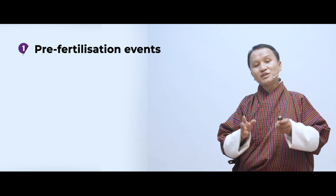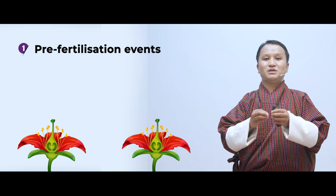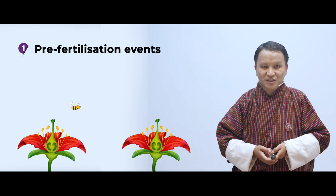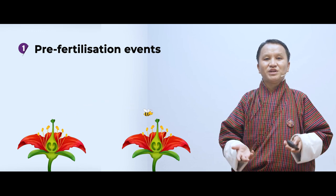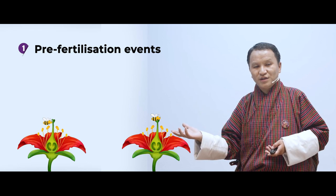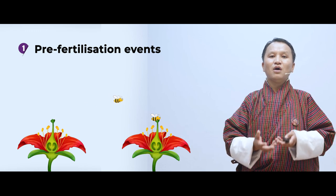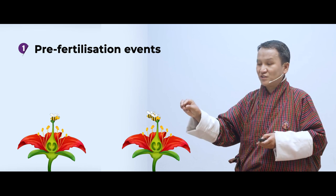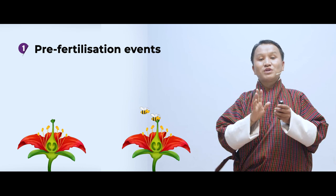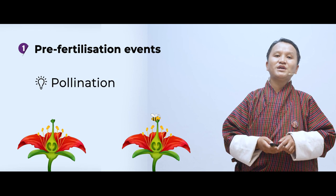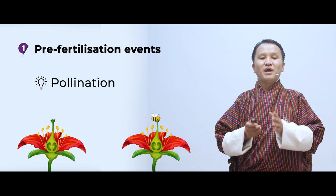Prior to fertilization it is important that male and female gametes meet. Unlike in animals, in plants the meeting of gametes must be assisted by some agent — called pollinating agents. In plants the male gametes are produced in the anther, while the female gametes are produced in the ovary, and these two are located in different places. Therefore, some factor must transfer the pollen grain from anther to stigma. This process of transferring pollen grain from anther to stigma is called pollination.